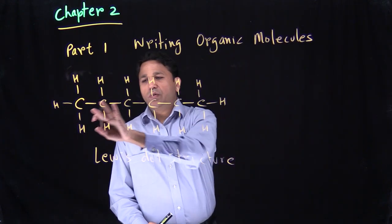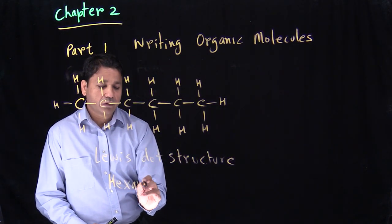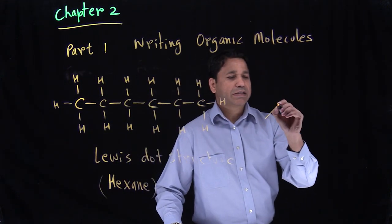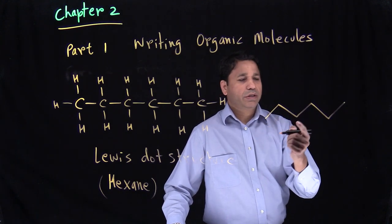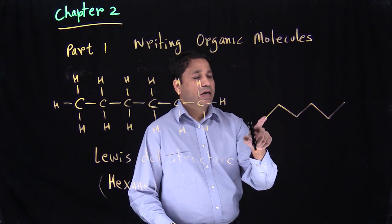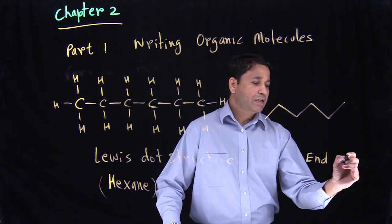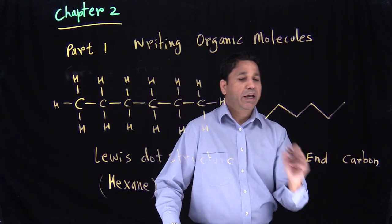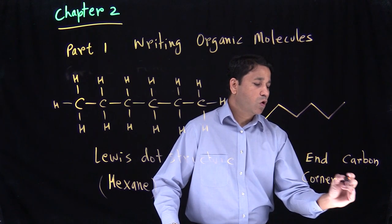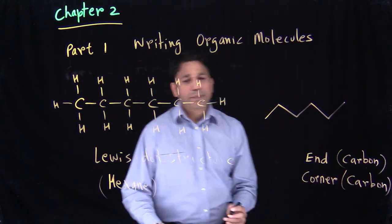If I want to write down a six-carbon chain — the name of this compound is hexane — how about if I just write it down like this? So we have one, two, three, four, five, six carbons. In this case, what you're looking at is each end is a carbon and each corner is a carbon.